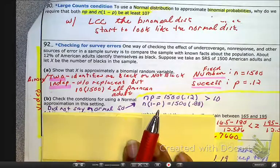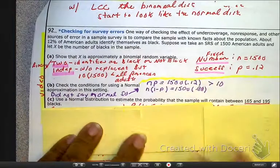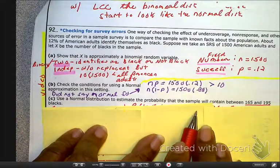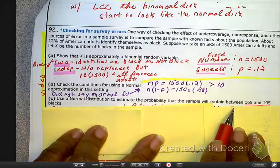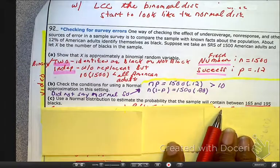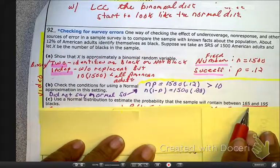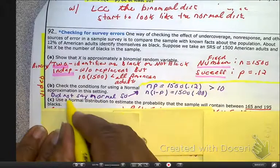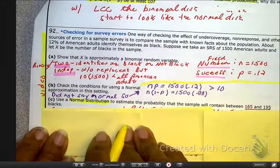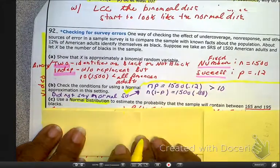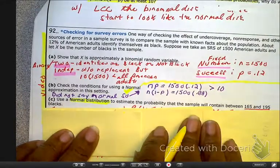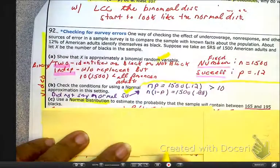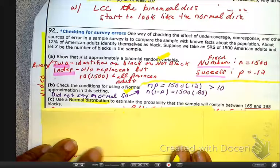Now, let's see what the next one is asking us. Now, this is saying use the normal distribution to estimate the probability that the sample will contain between 165 and 195 blacks. So, here's the thing. They said use the normal distribution, which means we had to establish that it was approximately normal, which we did right here. We are replacing the binomial distribution with the normal approximation, and that was okay because we established up there that it was a binomial distribution.